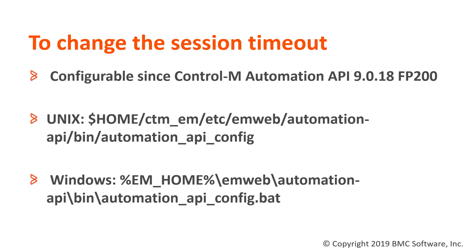Automation API Session Timeout is configurable since version 9.18.FxFx200. There is no external parameter to control token expiration, which is hard-coded for 1800 seconds or 30 minutes. When expired, the Automation API will trigger a return code of 200 for validation and 404 for an expired token respectively.